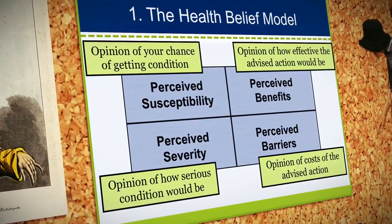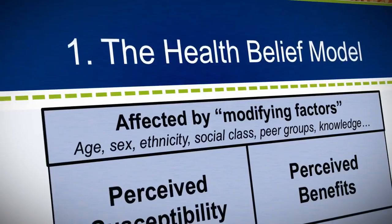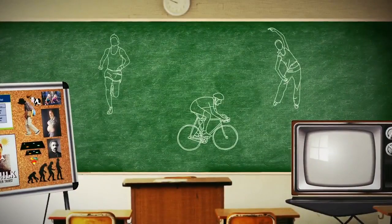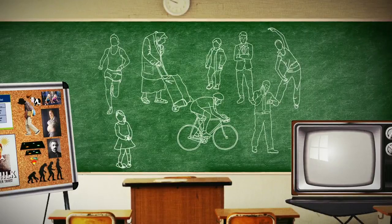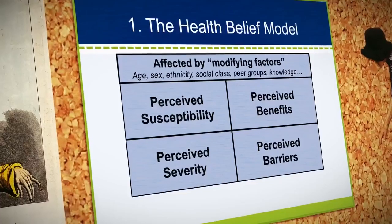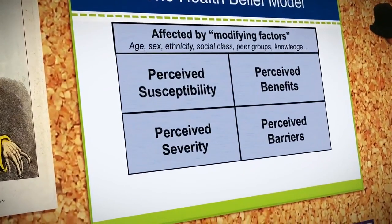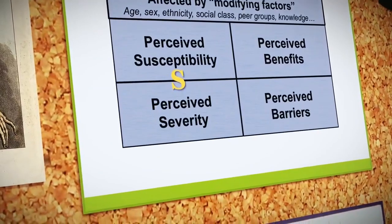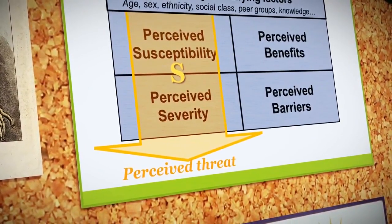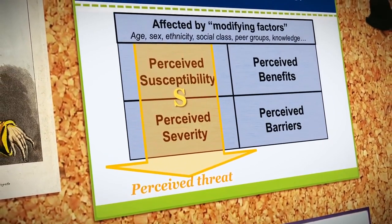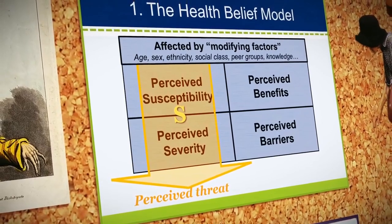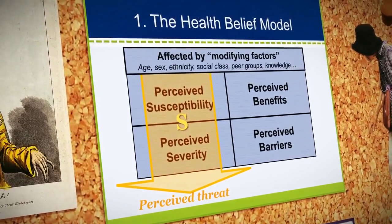The health belief model notes that all these perceptions are affected by modifying factors — things such as age, ethnicity, socioeconomic status, peer groups, knowledge, and so on. Our evaluations of perceived susceptibility for a particular condition and the perceived severity of that condition combine to create the perception of threat. If perceived threat is high, the likelihood of engaging in the health protective behavior is higher than it would be if the perception of threat was low, which might result in little motivation to change behavior.